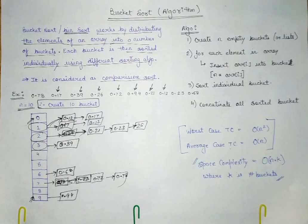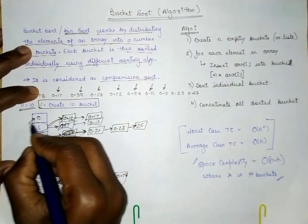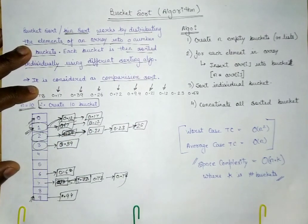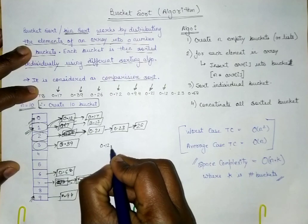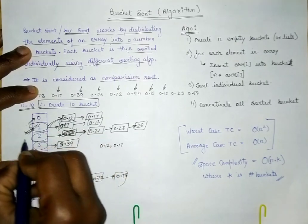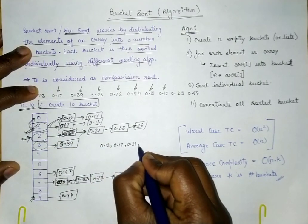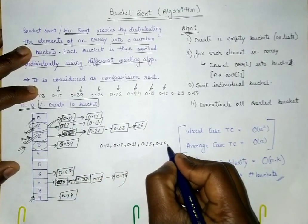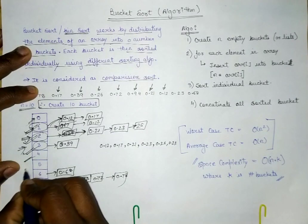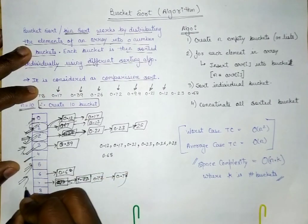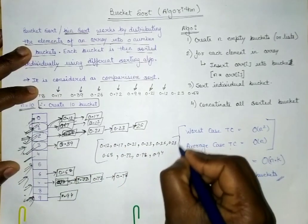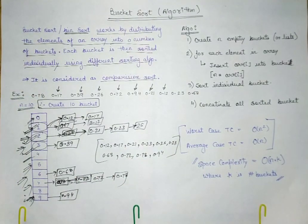Now we print the buckets one by one. Bucket 0 has no element. Bucket 1 gives 0.12, 0.17. Bucket 2 gives 0.21, 0.23, 0.26. Bucket 3 has one element 0.39. Buckets 4 and 5 have no elements. Bucket 6 gives 0.68. Bucket 7 gives 0.72 and 0.78. Bucket 8 has one element, and bucket 9 gives 0.94. The final list is sorted.